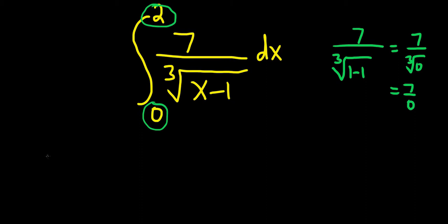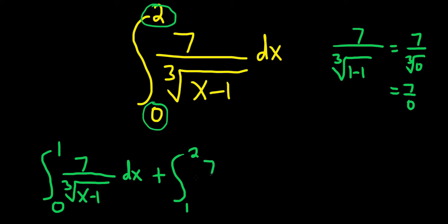So let's write this as two integrals. So we'll write it as the integral from 0 to 1 of 7 over the cube root of x minus 1 dx plus the integral from 1 to 2. So instead of just going straight from 0 to 2, first we go from 0 to 1 and then we go from 1 to 2. So this is 7 over the cube root of x minus 1 and again dx.